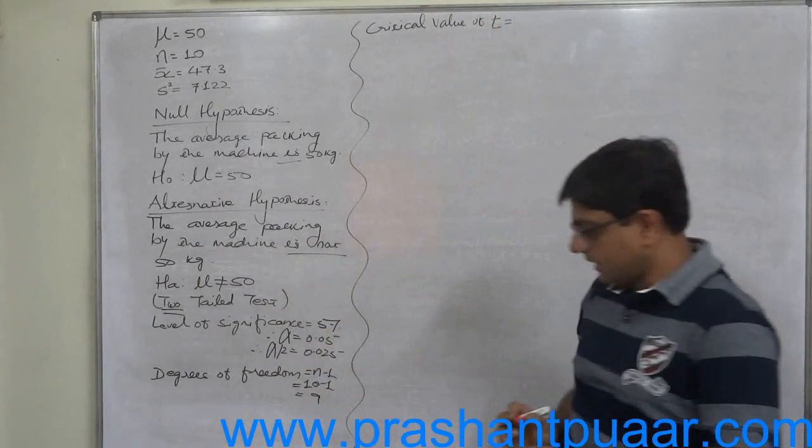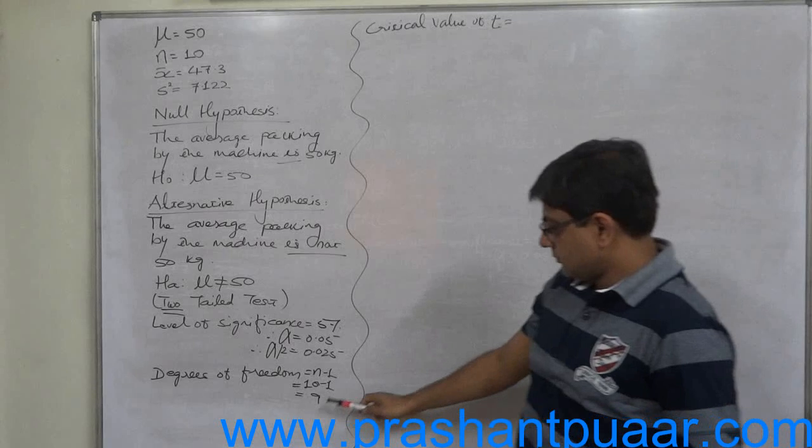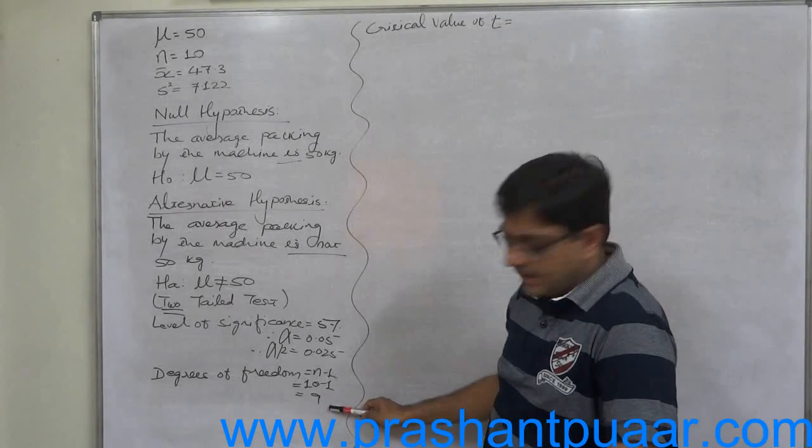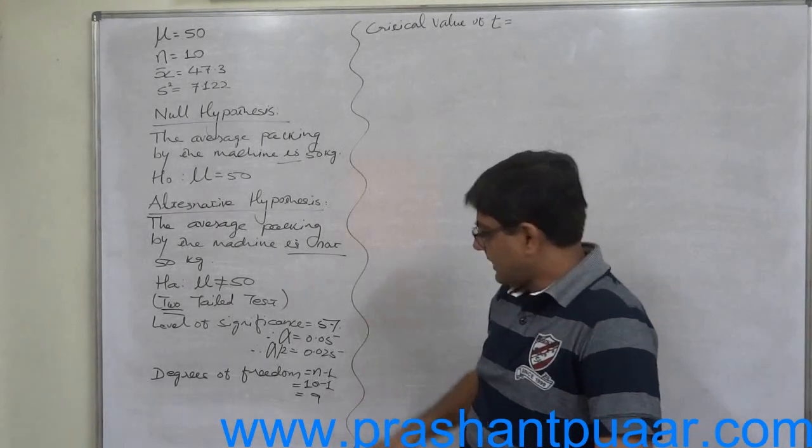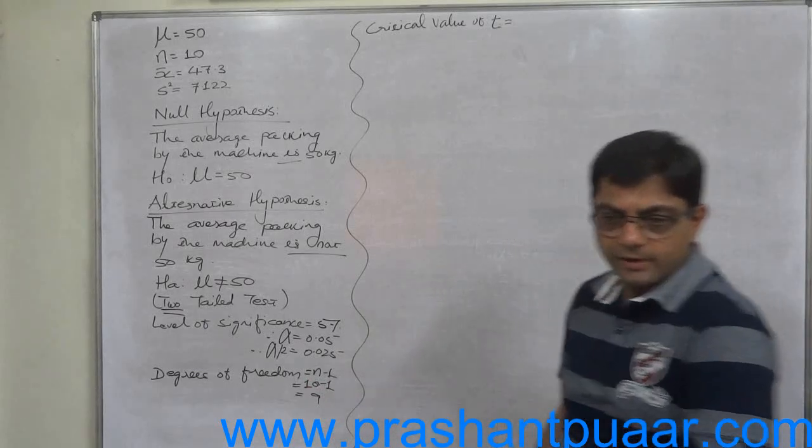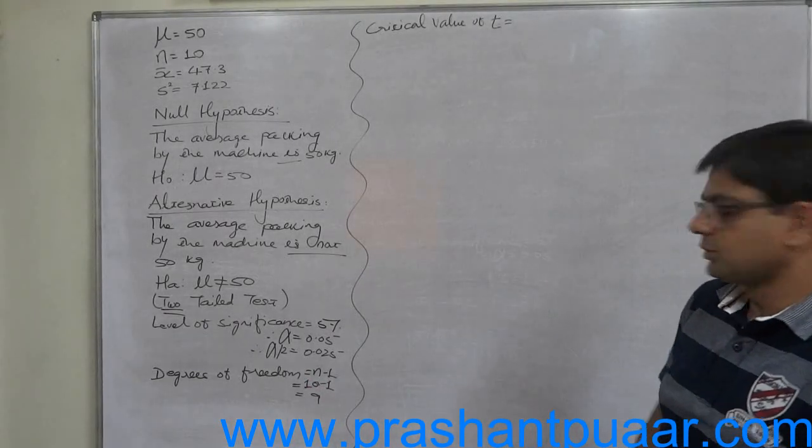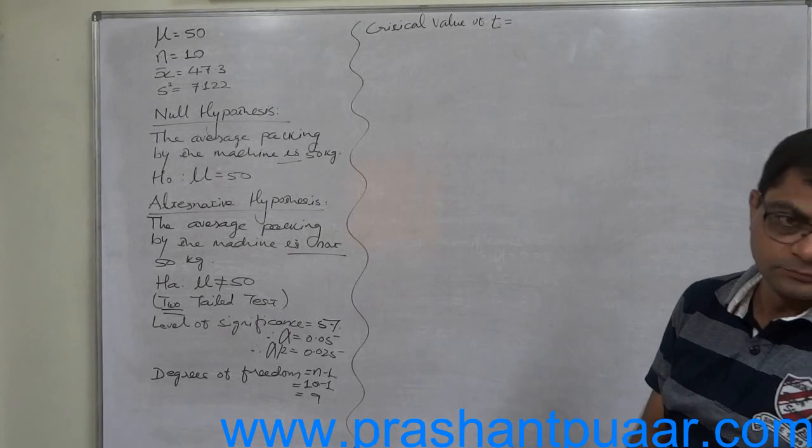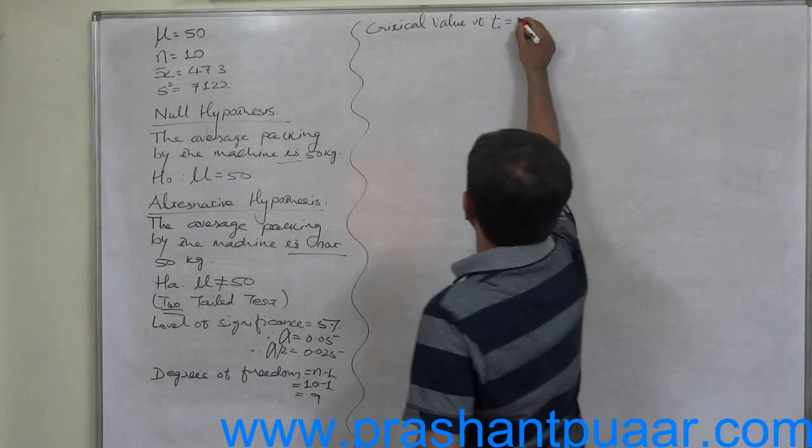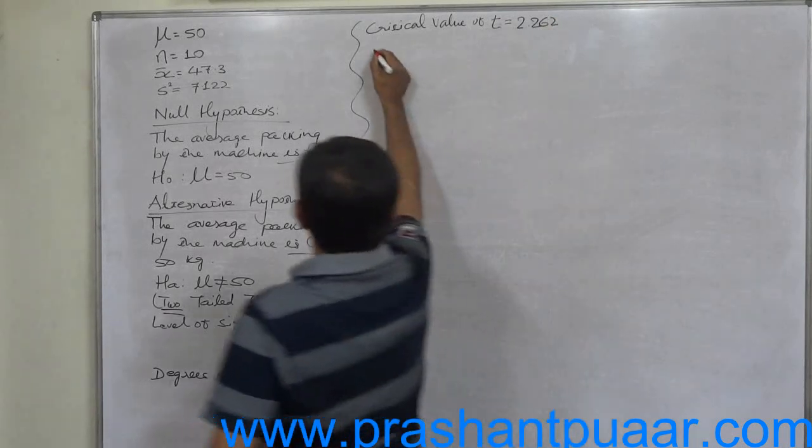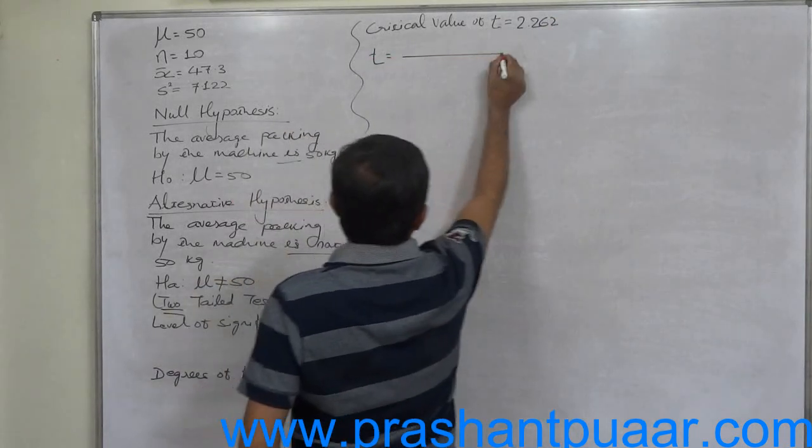On the basis of these two information—degrees of freedom as well as alpha by 2—we have to find the critical value of T from the table. Critical value of T: degrees of freedom in first column 9, row of 9 and column of 0.025, is 2.262.